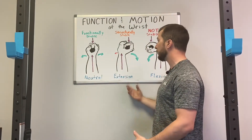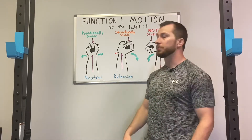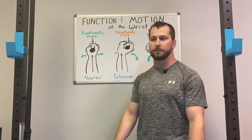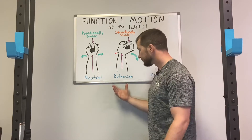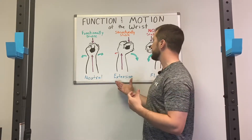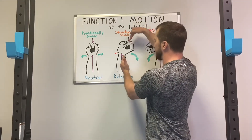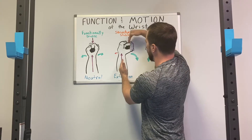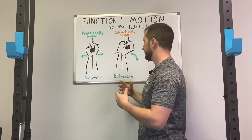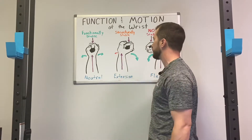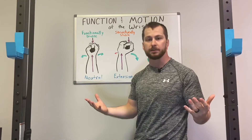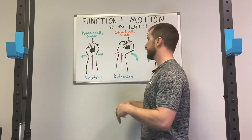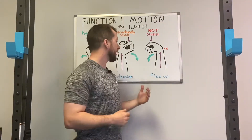Moving on to extension: this is the most structurally stable position for the wrist, called the closed pack position. Maximal extension is the closed pack position for many joints in the body, providing the most structural stability. However, it's not necessarily preferred because in this position the forces are not perfectly aligned — the force of the forearm bones comes up here, but the weight is behind it — causing some strength leak and extra pressure on the front of the wrist.